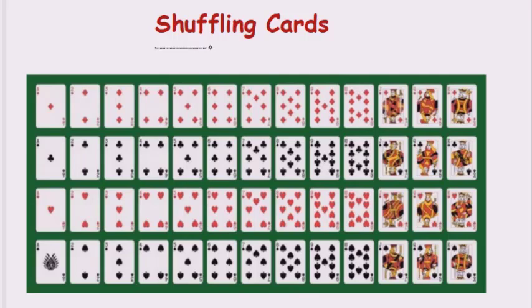This program is basically about getting random cards, just like when we are playing the game of cards — we shuffle it and the cards are distributed randomly. This program does the same thing: when we draw five cards, we get any random card. Let us see what the Python program for shuffling of cards looks like.